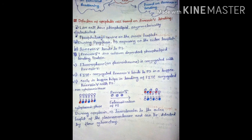To detect whether annexin-5 has bound to phosphatidylserine — and thus whether the cell has undergone apoptosis — we attach a fluorophore or fluorochrome to it. A fluorophore or fluorochrome is conjugated with annexin-5; specifically, FITC-conjugated annexin-5 is used.